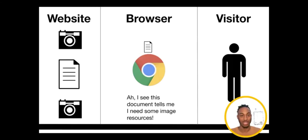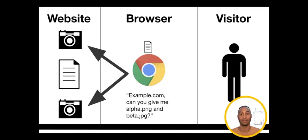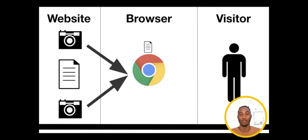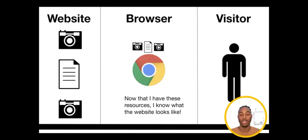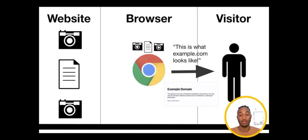After that, your browser downloads the file and reads the document. If it notices the document mentions other resources — like images — it goes back to example.com and requests those too, for example alpha.png and beta.jpg. The browser downloads those images, parses all the information, makes sense of it, and then displays everything to the visitor. This all happens behind the scenes every time you visit a new website.